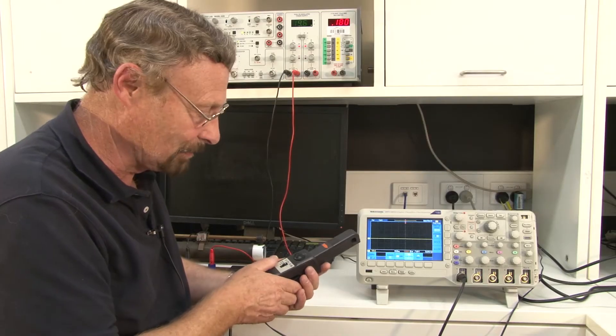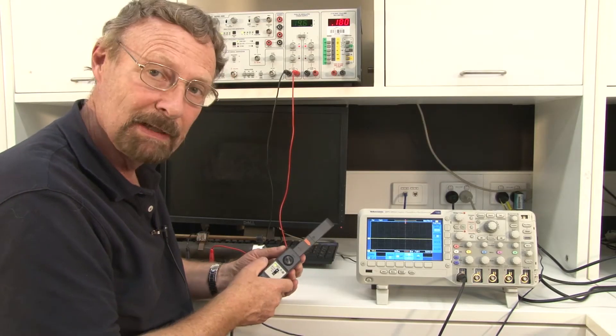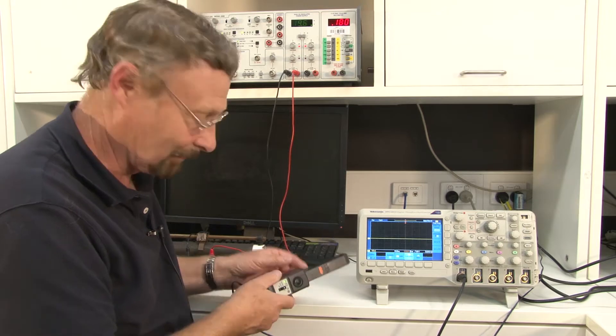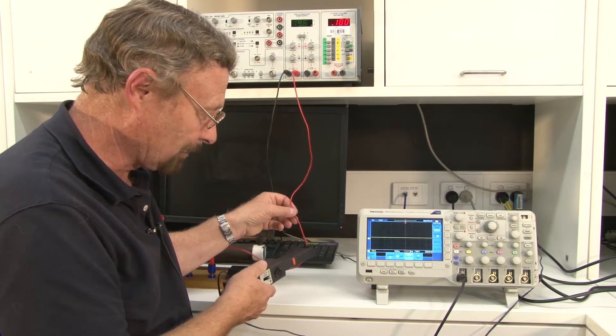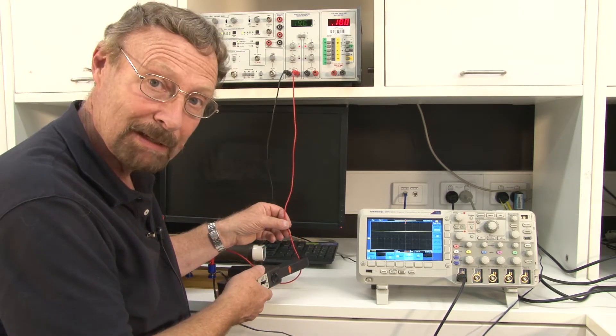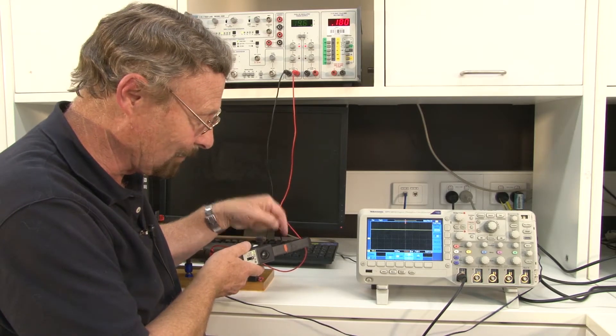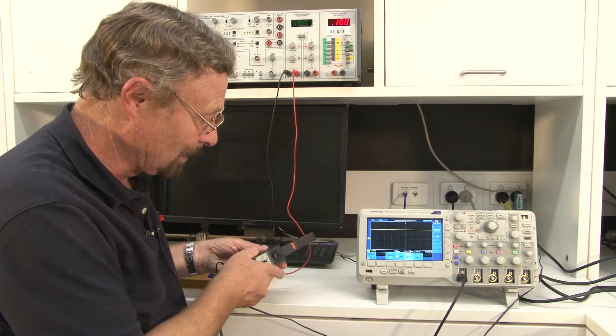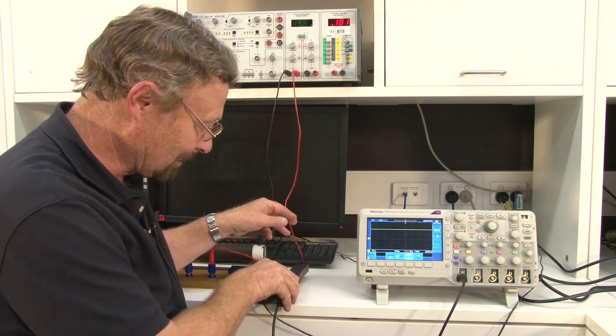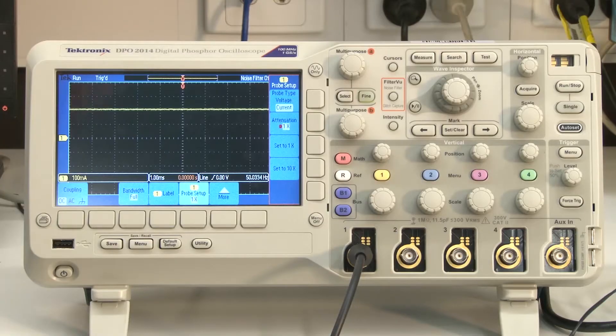So I now need to take this probe and actually connect it into the circuit. And so I'm going to take this cable, I'm going to actually clamp it to the cable like this, making sure that that arrow is in the same direction as the current flow. And then I'm going to just simply rest this guy on the bench.